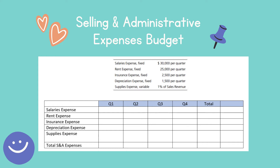As you can see, supplies expense is variable while everything else is fixed, because the fixed amounts are given per quarter per period of time. For supplies expense, it's one percent of sales revenue, so when sales revenue changes, supplies expense will change. I need to calculate only supplies expense, which is one percent of sales revenue.